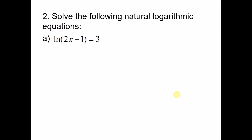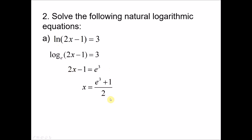Now we try to solve equations involving natural logarithm. Remember, ln means log base e. We can convert this so that it becomes an equation involving indices. Rewriting — ln is log base e — we move the e to the other side, so it becomes 2x minus 1 equals e to the power of 3. Move negative 1 to the right — it becomes plus 1. Divide by 2 — you can use your calculator. Use the value of e to the power of 3 plus 1, divided by 2, and you get the answer.